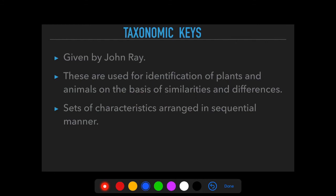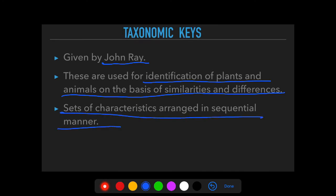The last taxonomic aid is Taxonomic Keys, given by John Ray. These are used for identification of plants and animals on the basis of similarities and differences. They are a set of characteristics arranged in a sequential manner — including characters like ears, wings, gills, body shape, and eyes — through which organisms can be identified.